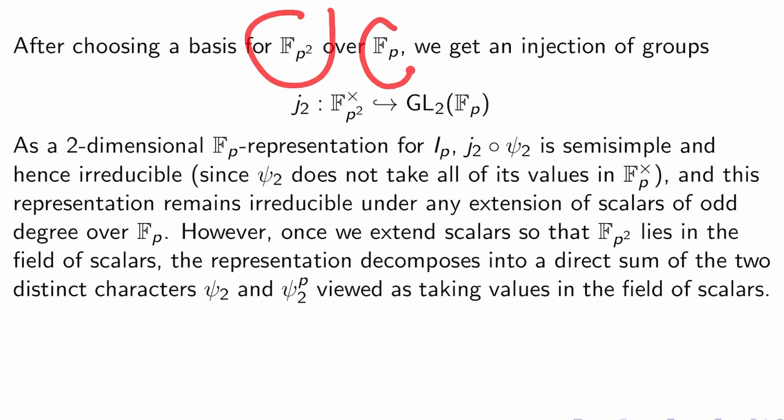After choosing a basis for F_{p^2} over F_p, we get an injection of groups, which we'll call j_2 from F_{p^2}^× into GL_2 of F_p. As a two-dimensional F_p representation for I_P, j_2 composed with the second fundamental character is semi-simple and hence irreducible. Why hence irreducible? Well, psi_2 doesn't take all of its values in F_p^×, so it can't be reducible if it's semi-simple. And this representation remains irreducible under any extension of scalars of odd degree over F_p. Once we extend scalars so that F_{p^2} lies in the field of scalars, the representation decomposes into a direct sum of the two distinct characters psi_2 and psi_2^p viewed as taking values in the field of scalars. This is covered in a lot of different places. For example, Serre's local fields, I think, covers all of this stuff.